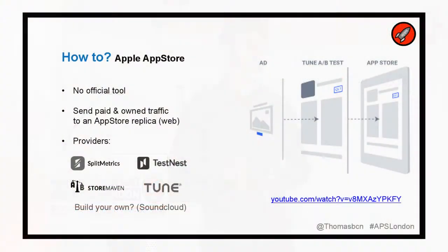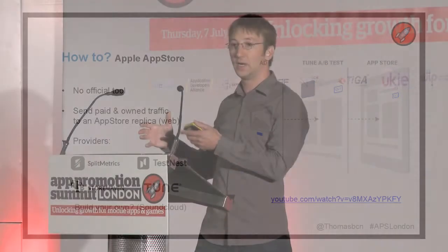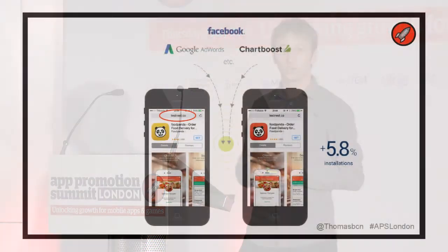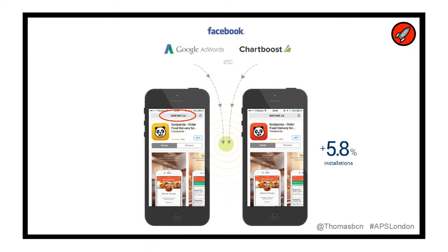A little bit of practice — how do you do it? On the Apple App Store it's not that simple. There's no official tool that enables you to do it. There are a couple of companies — I know four of them listed on screen — that enable you to test by building a replica on a web page. They build a fake App Store page. The user thinks this is the App Store, and you can control this page, change every element, and see the amount of clicks on one version versus another. There's actually a fun YouTube video on this you can check out later.